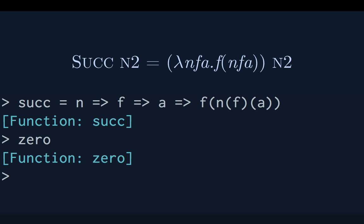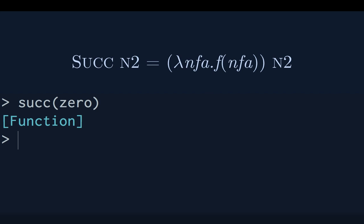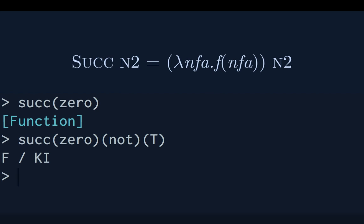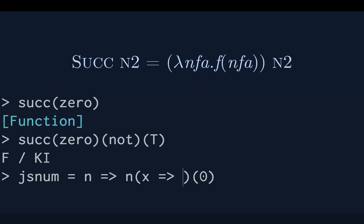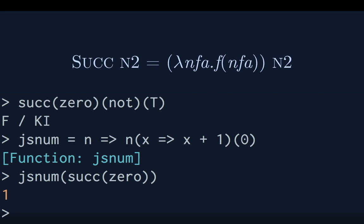I have this zero function. The successor of zero is some number function — not intentionally equal to what we had before, only extensionally equal. I need to prove it's the one function by applying not to true and getting false. To make this easier, I'll define a jsNum function: it takes a church numeral and applies it — take this, add one n times starting at zero. jsNum of the successor of zero gives me one.